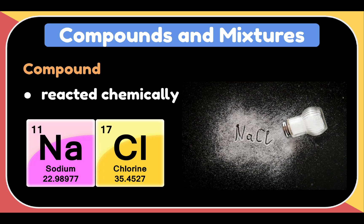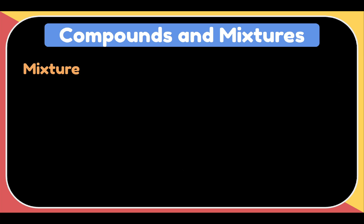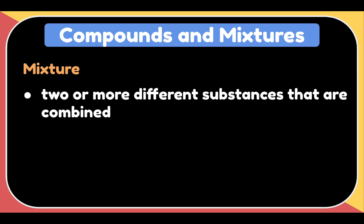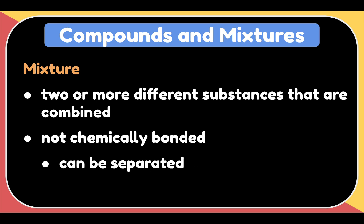We also have what we call mixture. A mixture is made up of two or more different substances that are combined. The substances are not chemically bonded, which means that a mixture can be separated into its original parts.